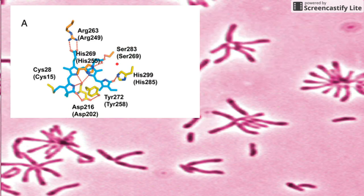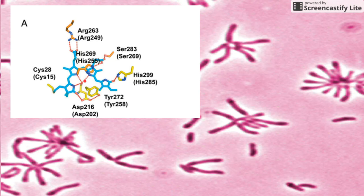This is the phytochrome, and here they found some residues that attach to biliverdin. They go about mutating these residues into alanine, which is a hydrophobic residue that won't bind to biliverdin. They use this to study which mutations do the trick of separating phytochrome completely from biliverdin.